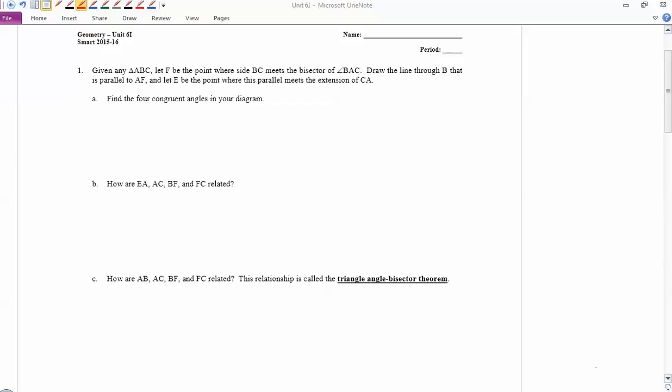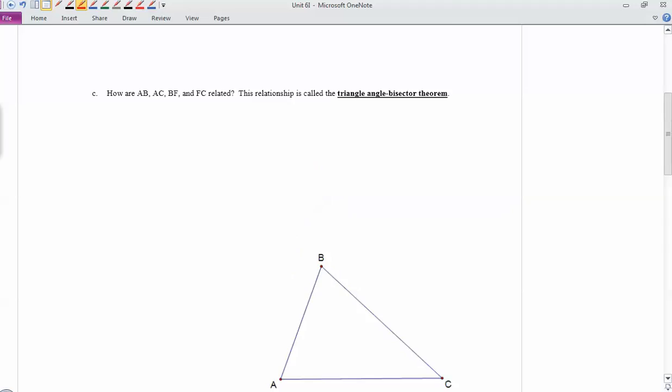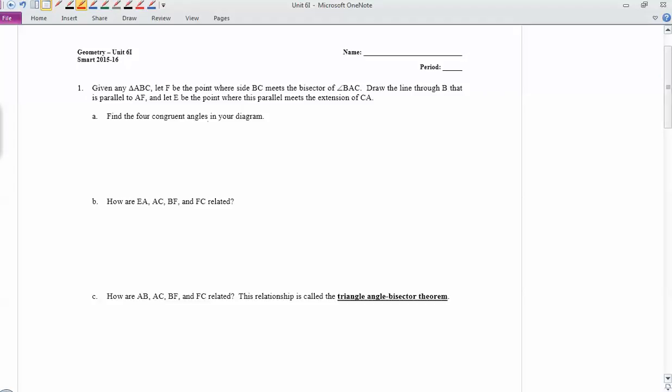Alright, so this is the unit 6i handout. The first page is deriving a theorem that we're going to use, and then the back side of the page will be just using the theorem. So down at the bottom of page one, there's a diagram down here, and we're going to use that as we work our way through these directions in number one.